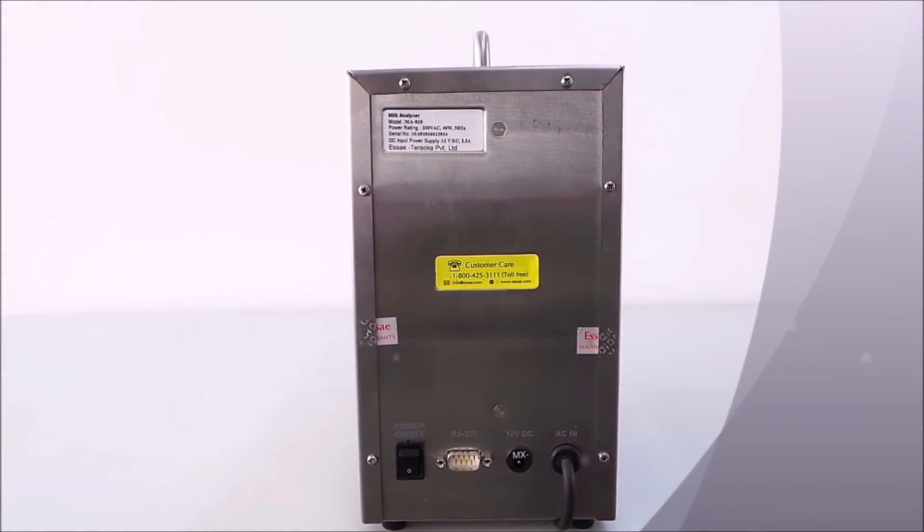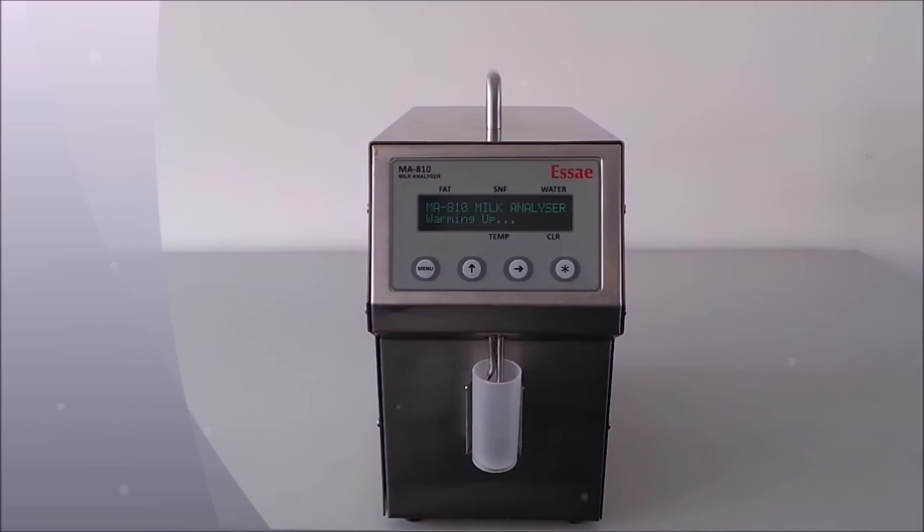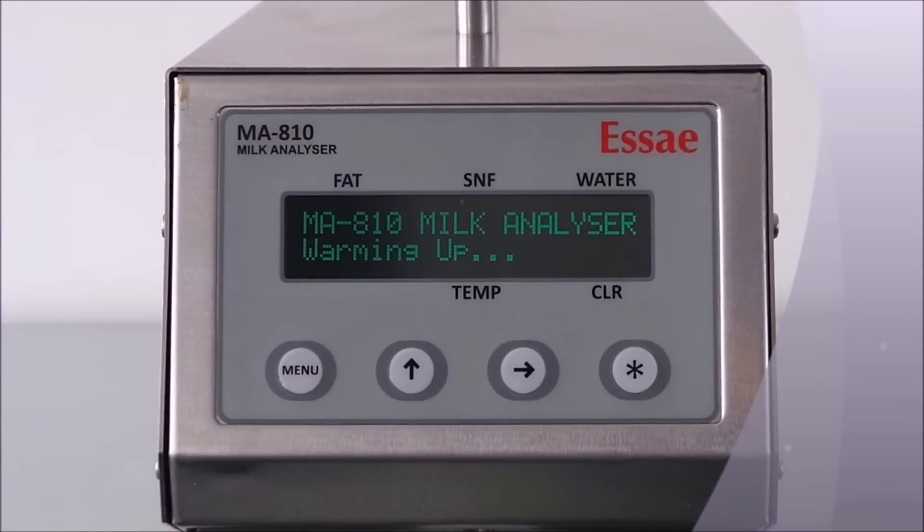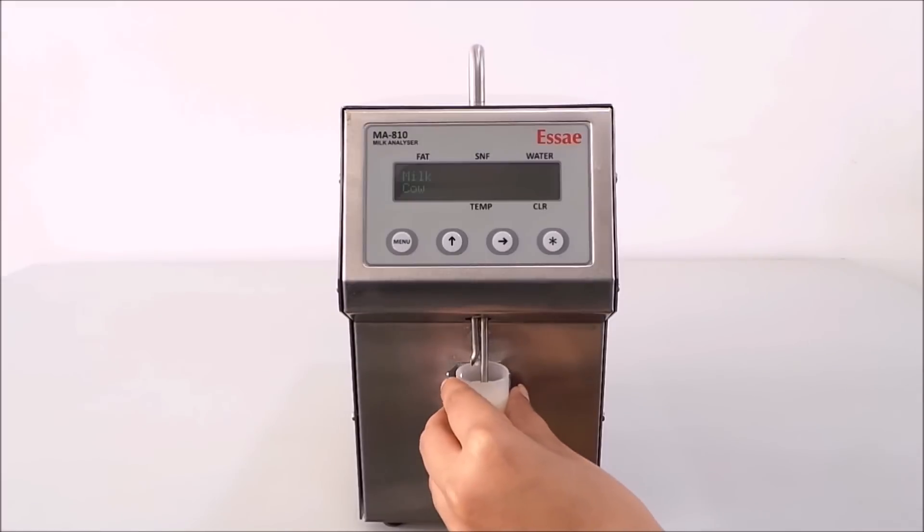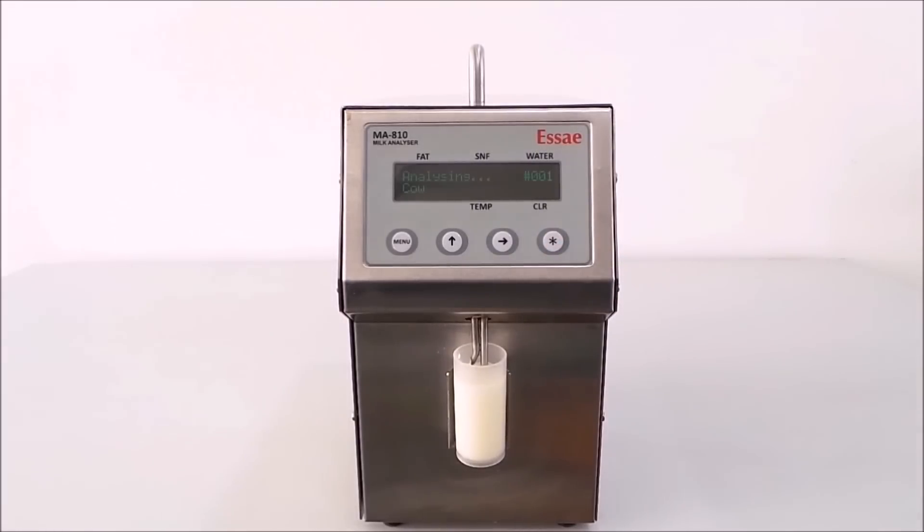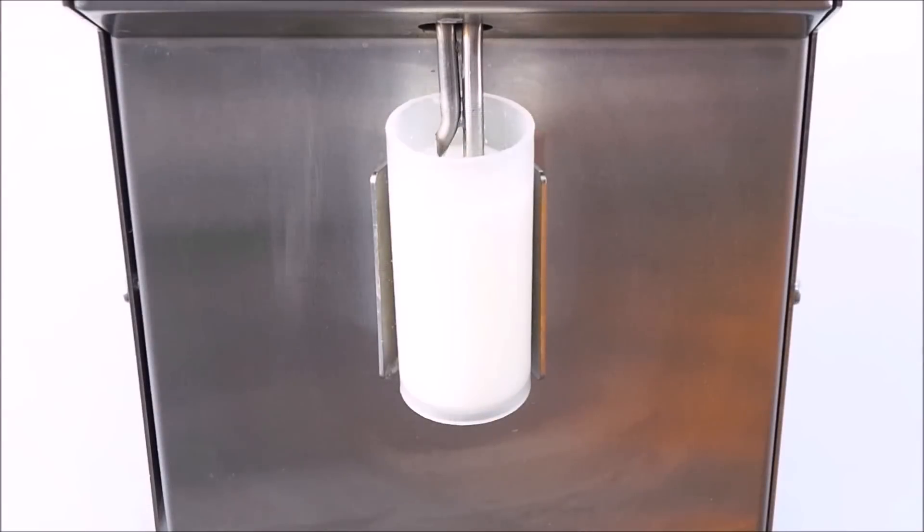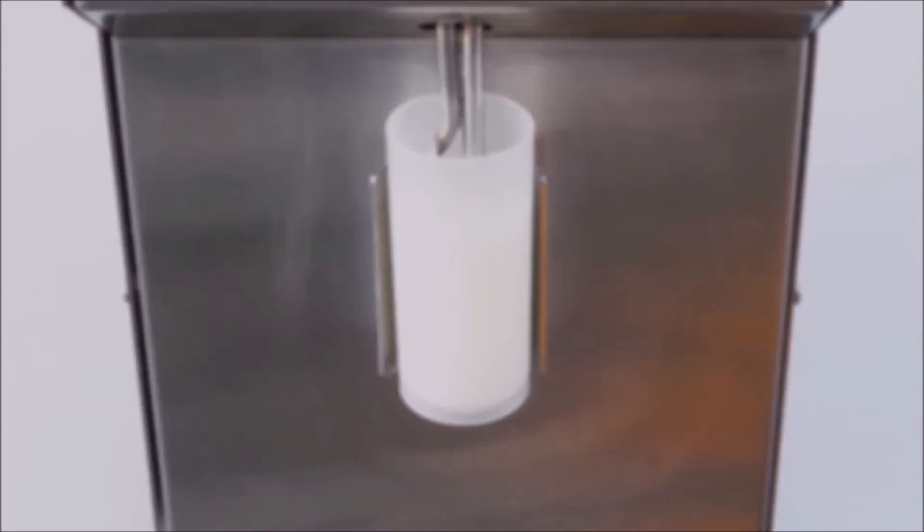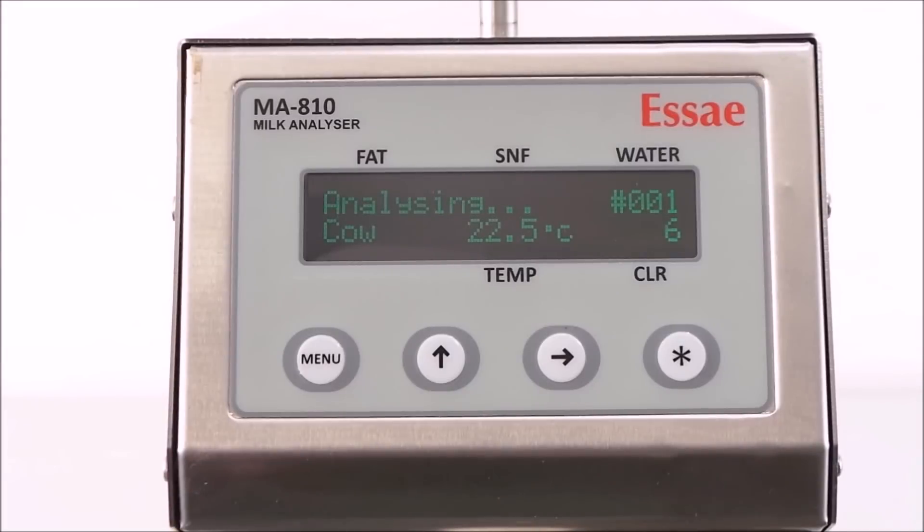To start, turn on the power switch placed on the rear end. Wait for some time to let the machine warm up. Once it is ready for analysis, place the container filled with milk in the holder and press the start button. The machine will take the milk in from the inlet pipe and start the process of analyzing. The countdown will be displayed on the screen.